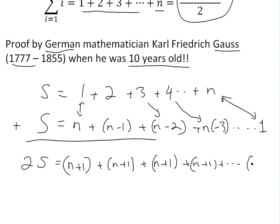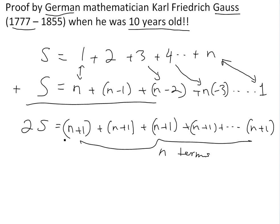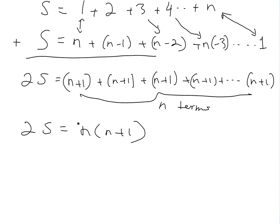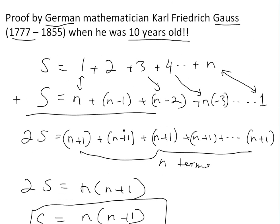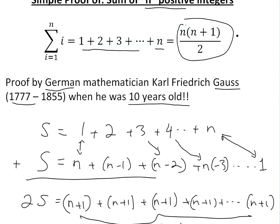This is going to be n plus 1, so you just sum them up this way. As you can see, this is just n terms here, so you can multiply it out. This would be 2S equals n times n plus 1. Then if you divide the 2 out, you're going to get S equals n times n plus 1 over 2. This is the proof that I just showed you, and so that is the proof. It's the exact same formula as right here.